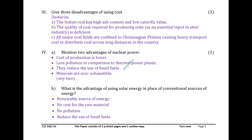Mention two advantages of nuclear power: Cost of production is lower. Less pollution in comparison to thermal power plants. They reduce the use of fossil fuels. Minerals are non-exhaustible. What is the advantage of using solar energy in place of conventional sources? Renewable source of energy. No cost for the raw material. No pollution. Reduces the use of fossil fuels.